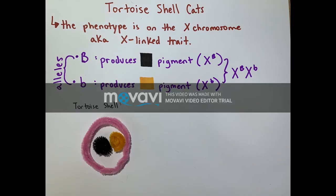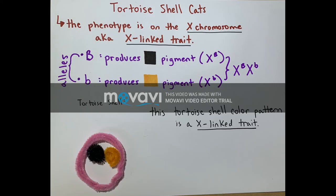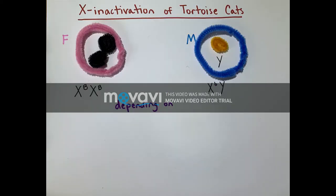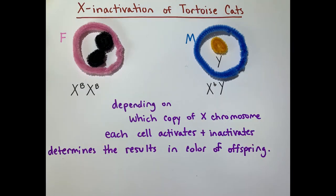Here is the basis of X-inactivation of tortoiseshell cats. Say a female is all black and a male is all yellowish-orange. They can create a heterozygous female tortoiseshell cat depending on which copy of X chromosome each cell activates and inactivates. This copy determines the results in the color of the offspring.